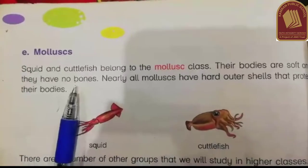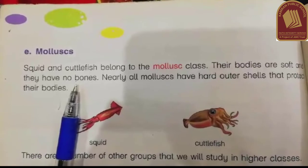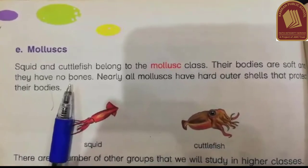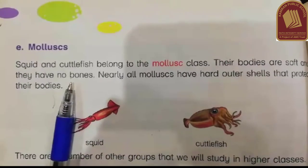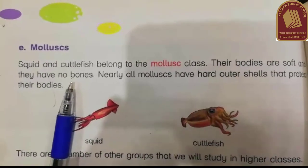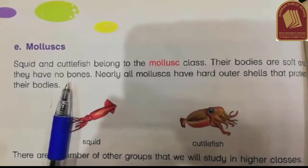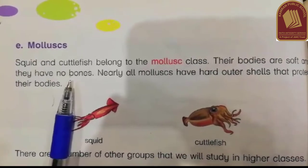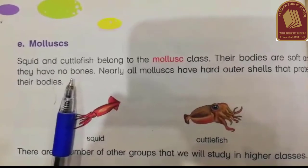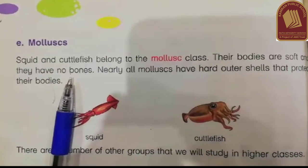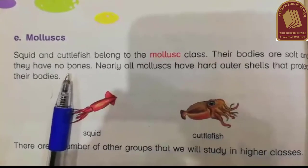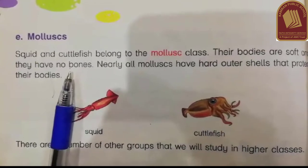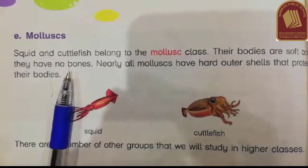The last and final group of invertebrates is molluscs. Examples include squid and cuttlefish. Their body is very soft and on their body there is a shell — an outer hard shell which protects their body. They have no bone.